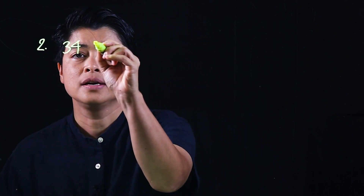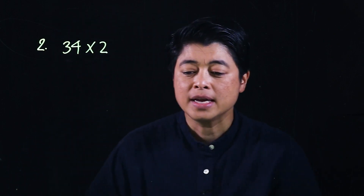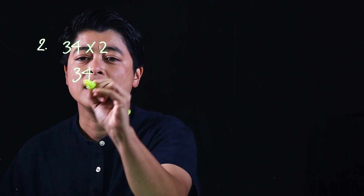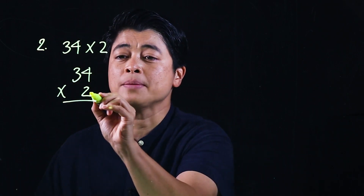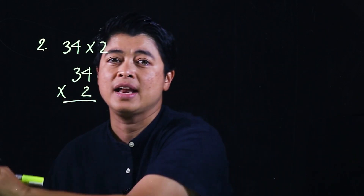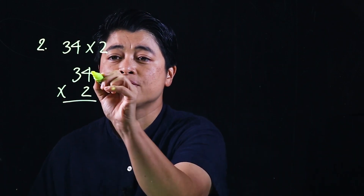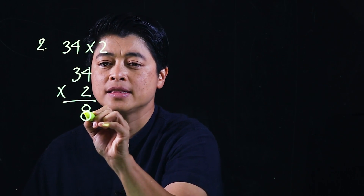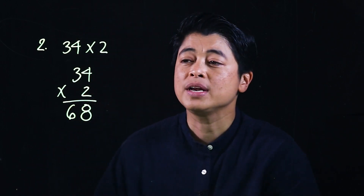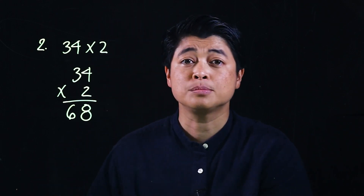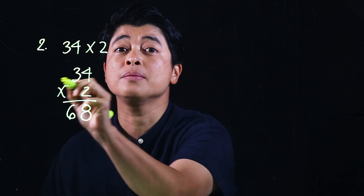The first problem says find the product of 34 and 2. They wrote it down as 34 times 2. We multiply from the right to the left: 2 times 4 is 8, and 2 times 3 is 6. We need to show this to the kids because they need to go through the motion of multiplying from right to left.